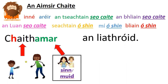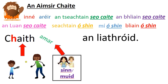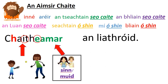Now look at this one: Chaitheamar an liathróid — we threw the ball. There's a leathan vowel here, but look at this ending — that is not a leathan vowel. That's a caol vowel. I and E are narrow vowels, and you can't put a caol with a leathan — tá seo mícheart. So we fall away with that version of 'amar', and instead we use this version: E-A-M-A-R. Now look — there's a caol vowel here and a caol vowel here — caol le caol, tá seo ceart go leor.